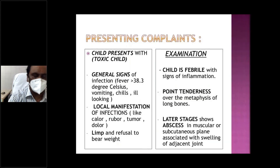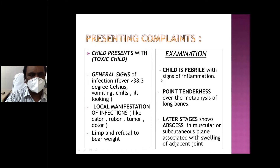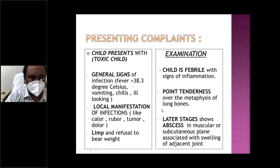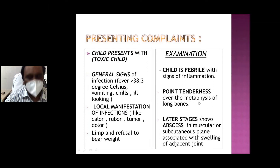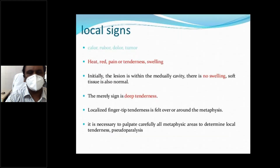Clinical presentation: The first and foremost sign is fever. All classical inflammatory signs are present — redness, erythema, localized warmth, swelling. The child refuses to move the limb — pseudoparalysis. Point of tenderness at the metaphysis is a very important clinical sign. If an abscess has already formed, fluctuation will be present.